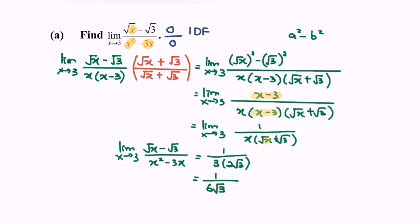Do remember to rationalize the denominator, meaning we have to multiply by square root of 3. And the value will be square root of 3 over 18.